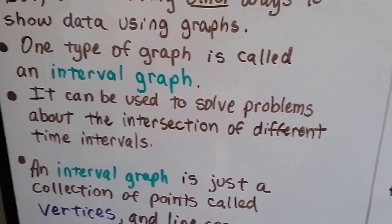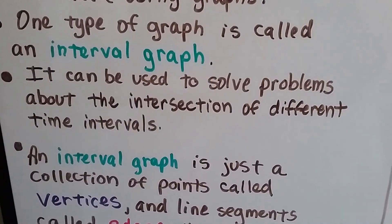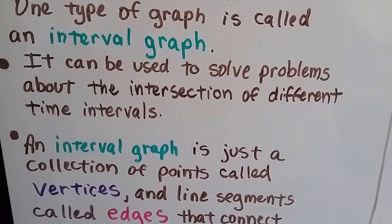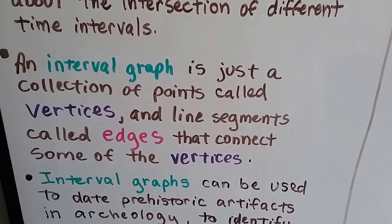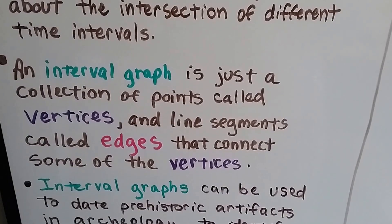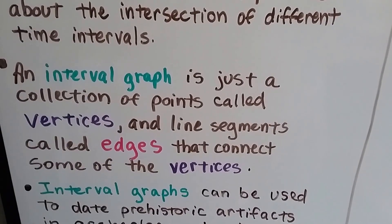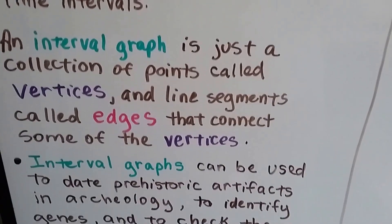One type of graph is called an interval graph. It can be used to solve problems about the intersection of different time intervals. An interval graph is just a collection of points called vertices and line segments called edges that connect some of the vertices.